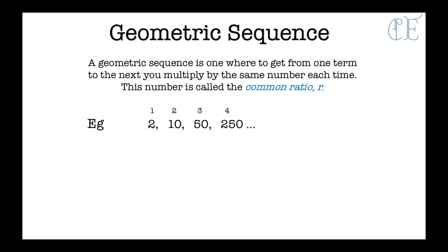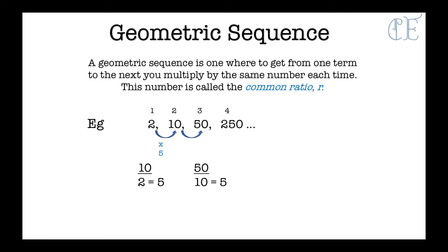Let's have a look at this series of numbers. We have four terms. The first term is 2, the second term is 10, the third term is 50, and the fourth term is 250. We can do 10 divided by 2 which gives us 5, so we times by 5 to get to 10. Then 50 divided by 10 is 5 and 250 divided by 50 is 5. So our common ratio is 5 — we times by 5 every time.